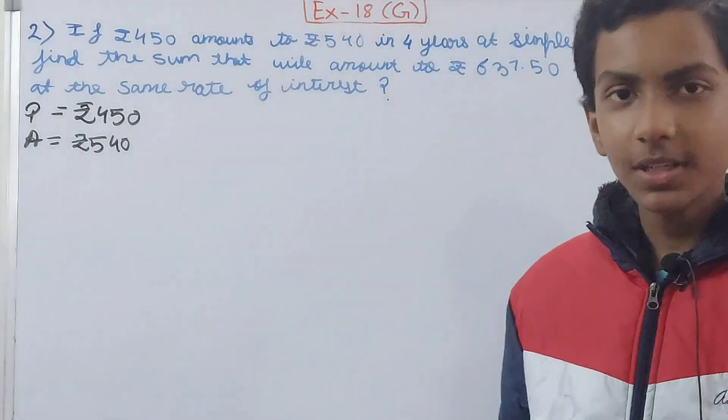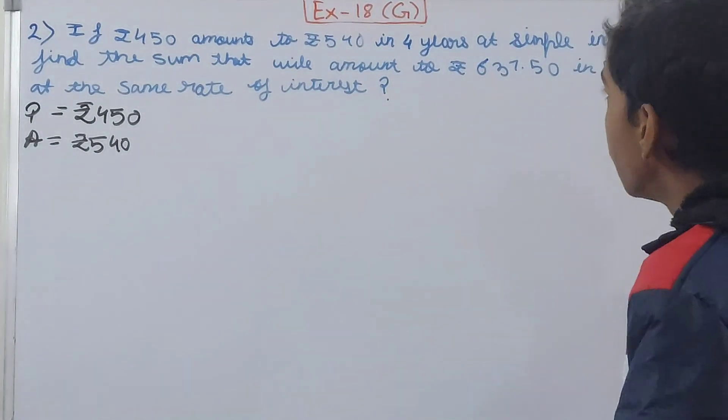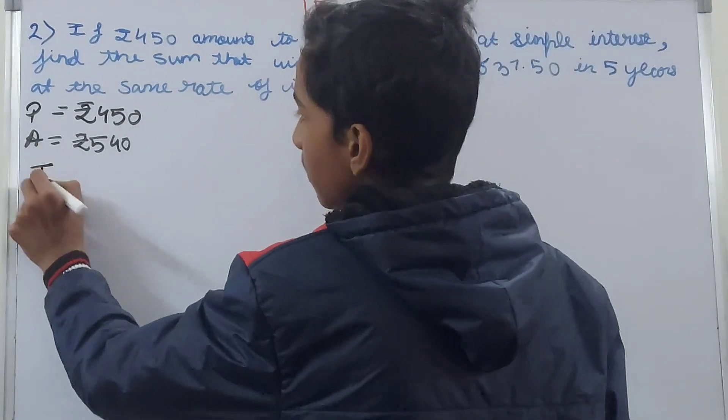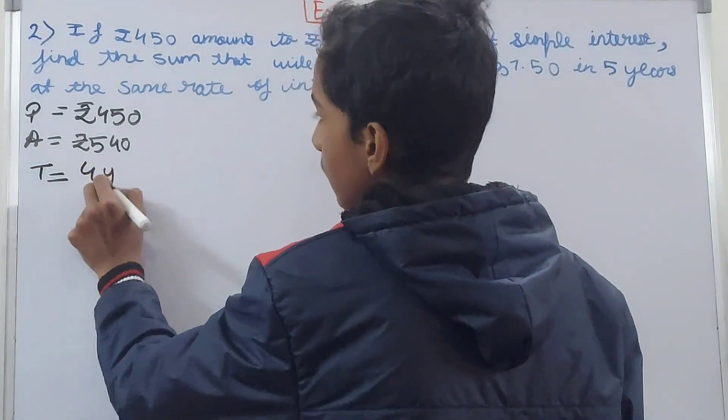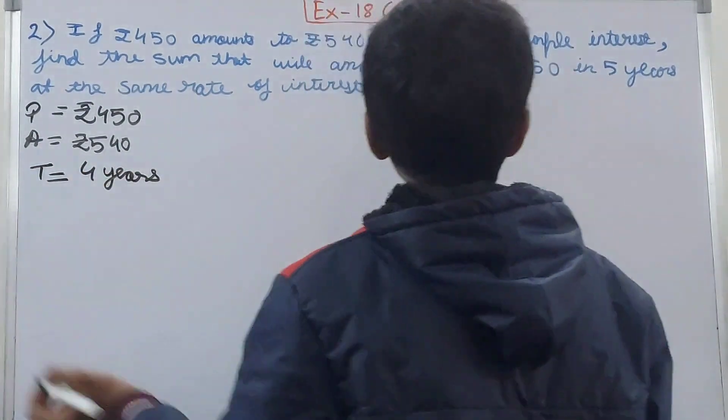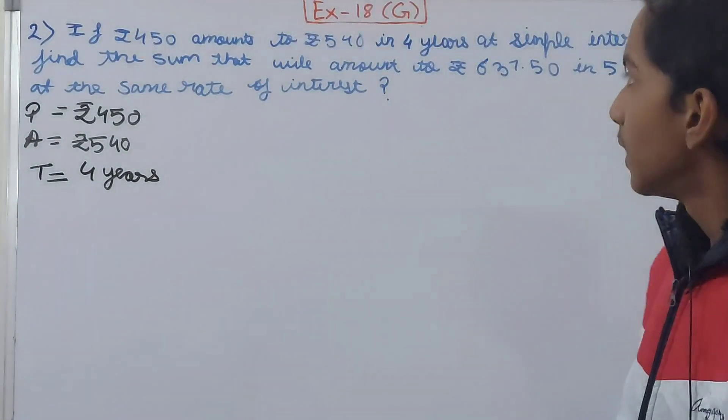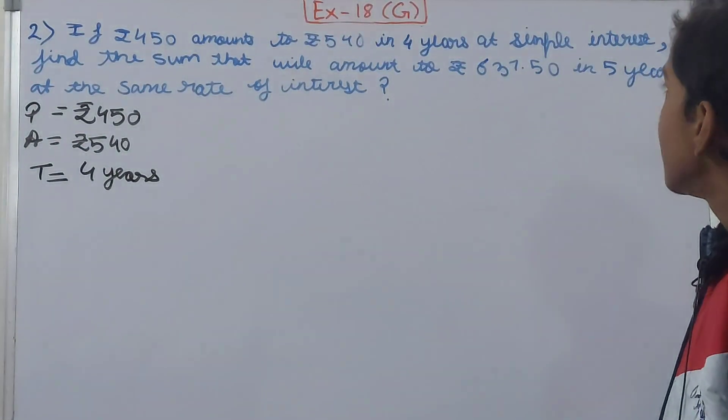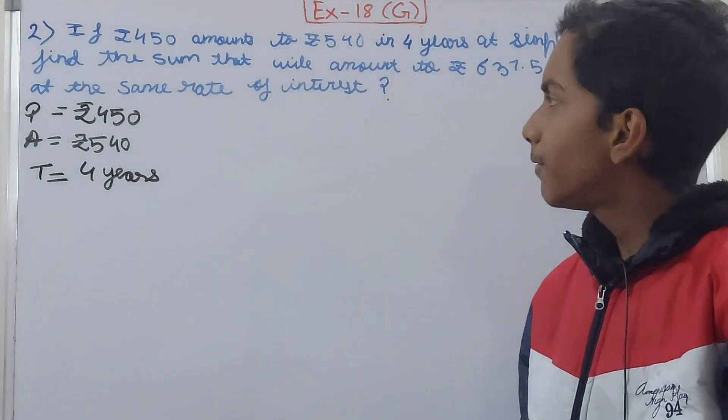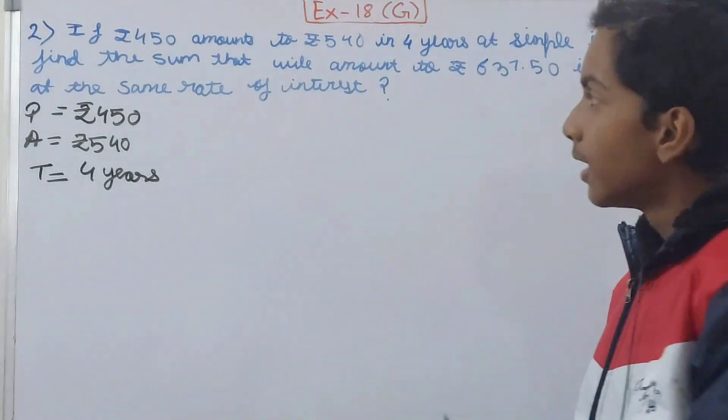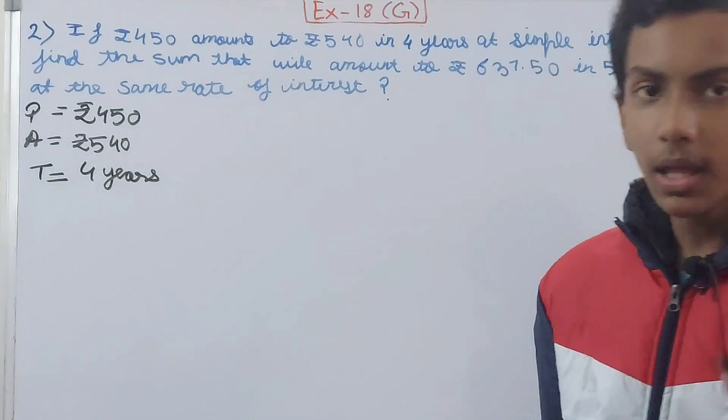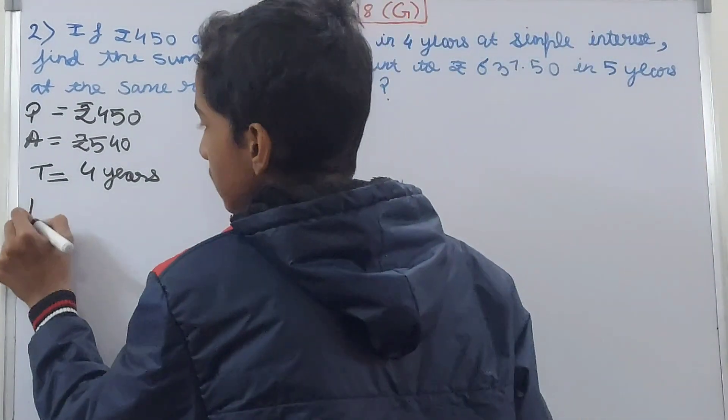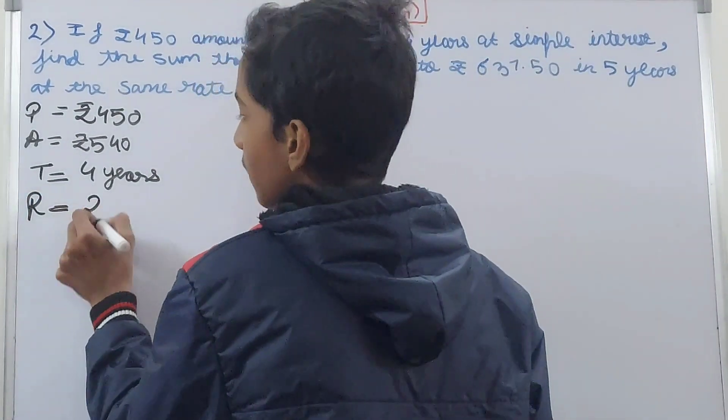Then in four years, so our time becomes T = 4 years at simple interest. Find the sum that will amount to ₹637.50 in 5 years at the same rate of interest. Now the rate is not given to us. The rate is not given to us.